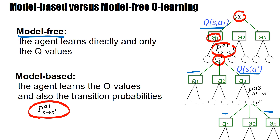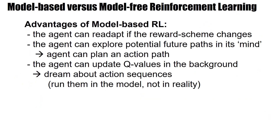Model-based essentially means the agent learns the Q-values and also the transition probabilities. In fact, if it knows the transition probabilities and the reward locations, it can reconstruct the Q-values algorithmically. The advantage is: if the reward scheme changes, you just find the new reward location once and then recalculate the Q-values with the Bellman equation, because you have a model of the transition probabilities — the likelihood of going from S to S-prime under action A.